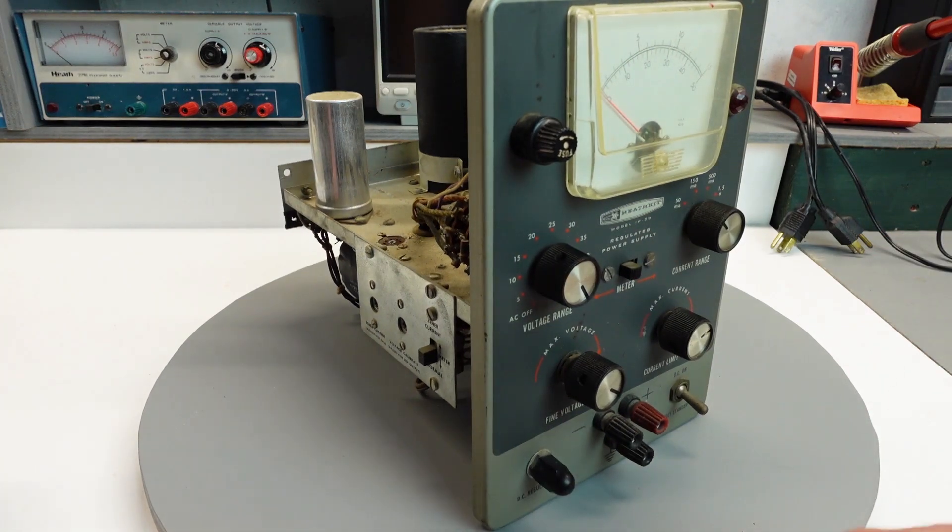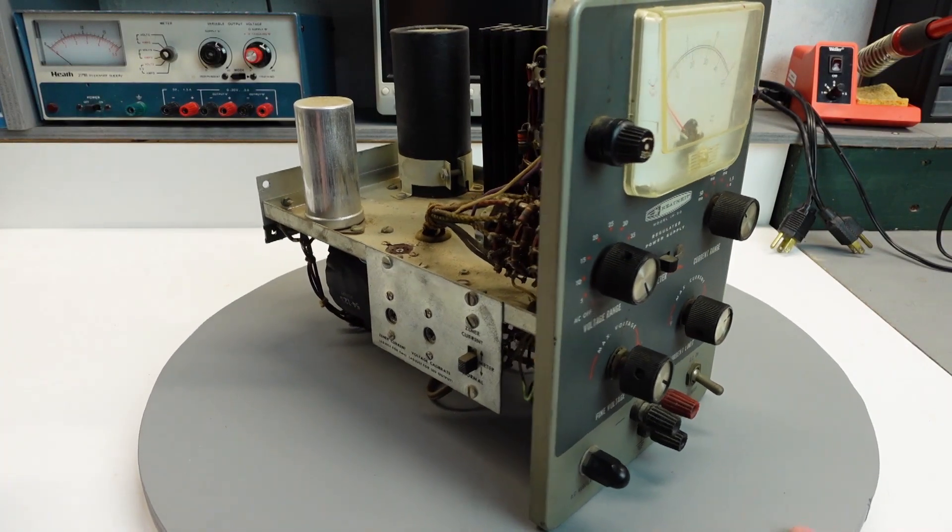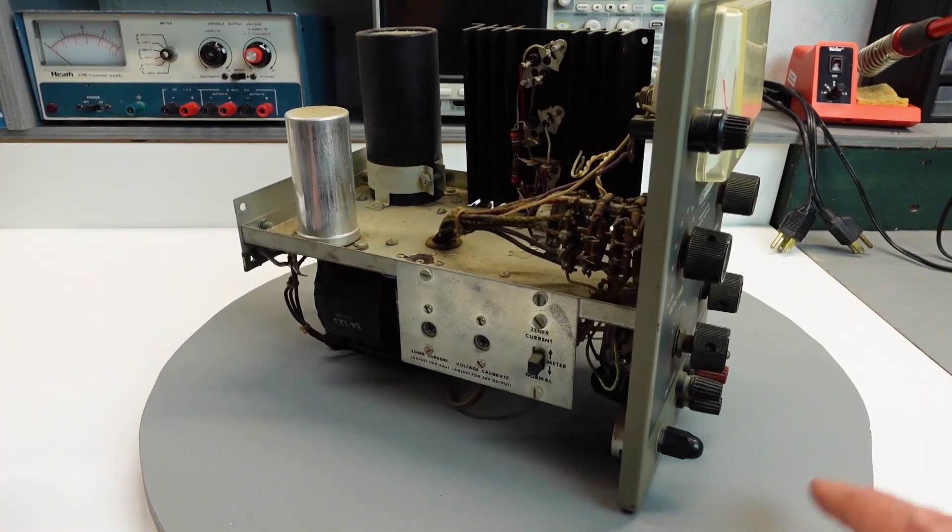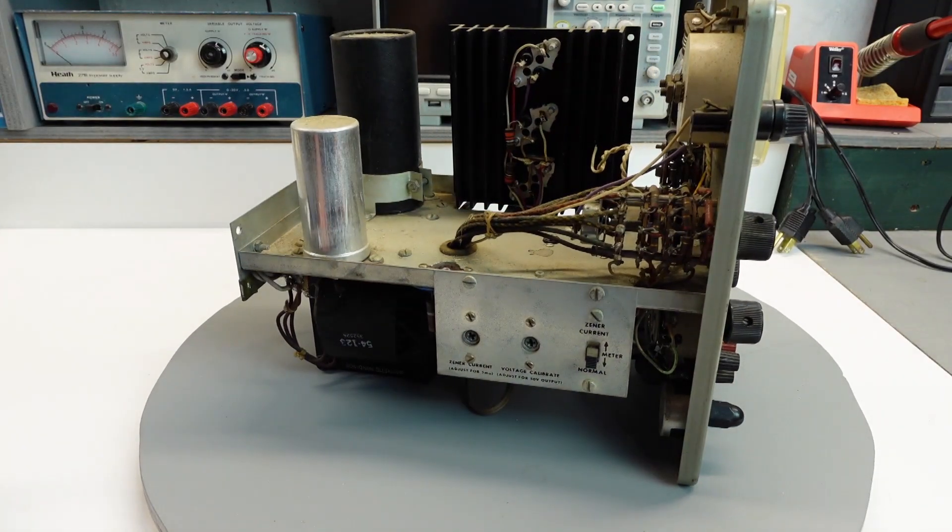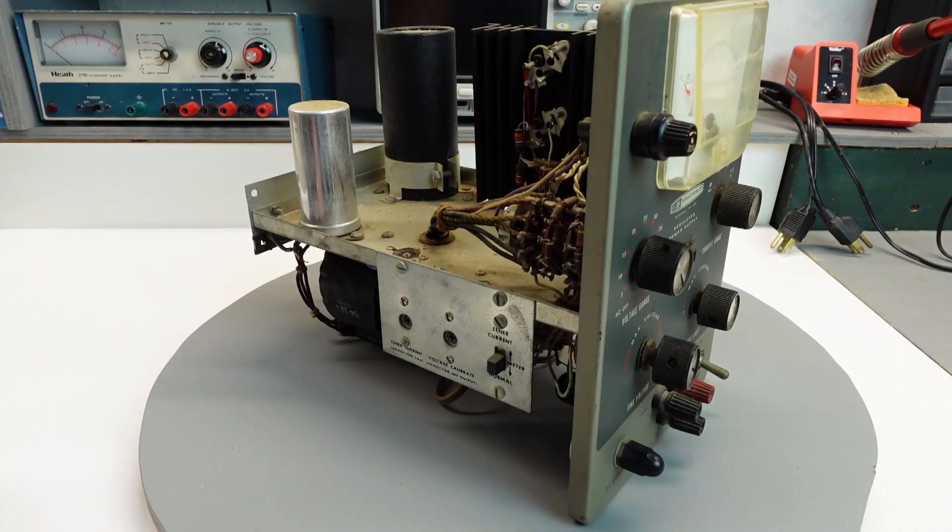So approach number two, keep only the best bits and pieces and build a practical design around them that achieves the same or maybe even better performance as the original. So starting, of course, with the meter and the transformer. Practical, of course, means that usual balance of the project trifecta, cost, time, and scope. So in the end, that's what I'm going to do. And that's how I'm going to approach this project.